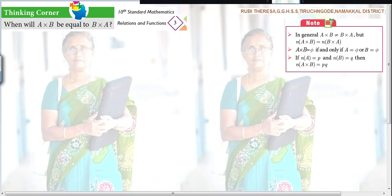Now listen here. Thinking corner. When will A cross B be equal to B cross A? Actually, what they have given? In general, A cross B is not equal to B cross A. We have done many problems in exercises and examples. But they are asking, when will A cross B be equal to B cross A? When both are equal.